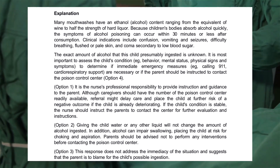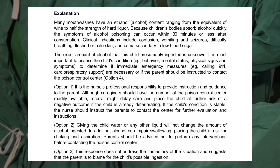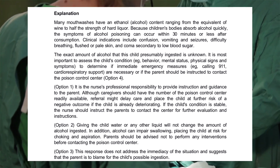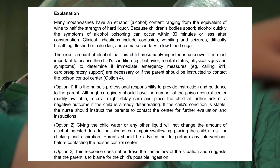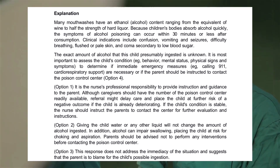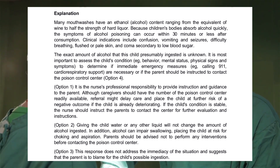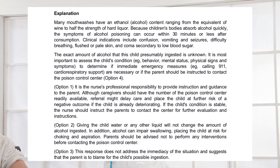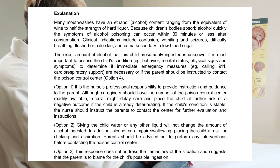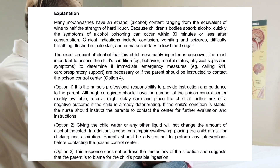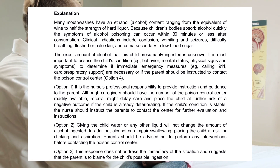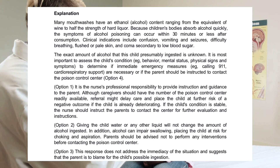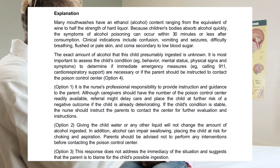Many mouthwashes have an ethanol alcohol content ranging from the equivalent of wine to half the strength of hard liquor. Because children's bodies absorb alcohol quickly, symptoms of alcohol poisoning can occur within 30 minutes or less after consumption. Clinical indications include confusion, vomiting and seizures, difficulty breathing, flushed or pale skin, and coma secondary to low blood sugar. The exact amount of alcohol this child presumably ingested is unknown. It is most important to assess the child's condition — behavior, mental status, and physical signs and symptoms — to determine if immediate emergency measures such as calling 911 or cardiorespiratory support are necessary, or if the parent should be instructed to contact the poison control center.